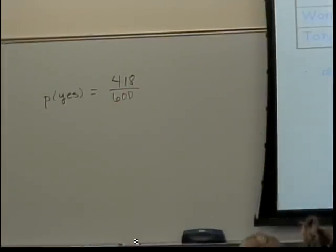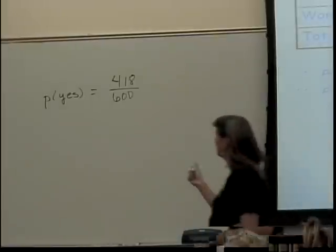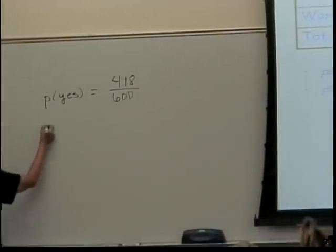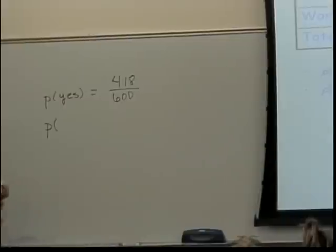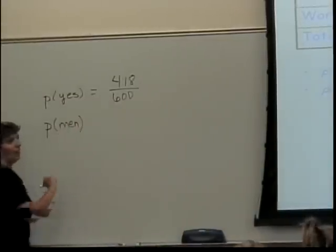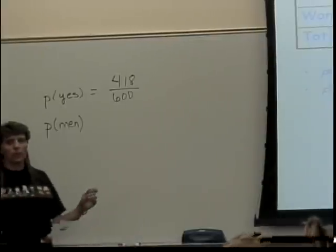Where are the yes people? Because that's what it's asking me. We're out of everybody. There are 418. They're right here. Because we're talking about just people who said yes, we don't care if they were men or women. There are 418 of them.